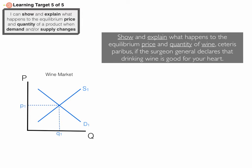Our first example concerns the wine market. You can see our generic graph at the left and everything is completely labeled. You have the axes labeled: y-axis P for price, x-axis Q for quantity, our equilibrium starting price P1, and our equilibrium starting quantity Q1. That's important to have in there.